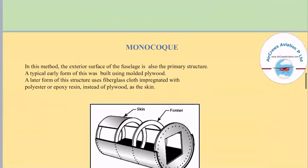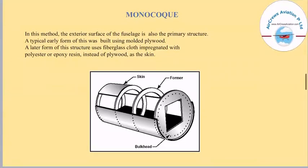In the monocoque method, the exterior surface of the fuselage is also the primary structure. An early form was built using molded plywood. A later form uses fiberglass cloth impregnated with polyester or epoxy resin instead of plywood as the skin.